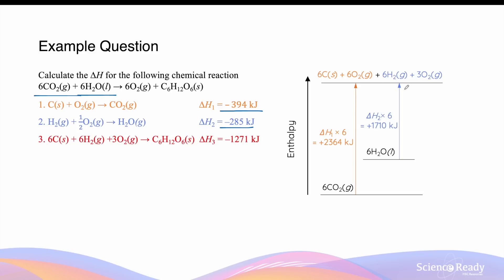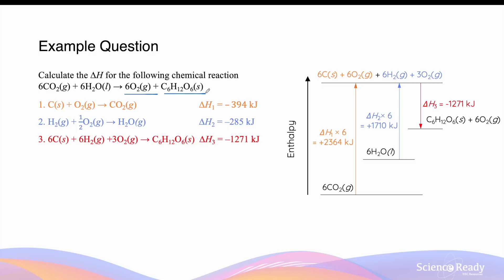After breaking down the two reactants into carbon, hydrogen, and oxygen, these elements can be combined through bond formation to produce the final products: glucose and oxygen gas. The enthalpy change of this step is the sum of enthalpy of formation of glucose and oxygen gas. The enthalpy of formation of glucose is −1271 kJ, and that of oxygen gas is zero since it is already in its standard state. So the enthalpy change of this step equals simply the enthalpy of formation of glucose.